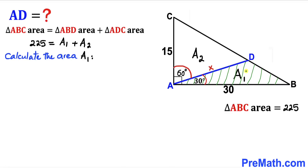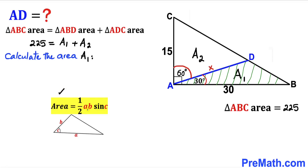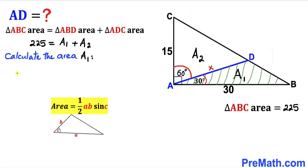Let's calculate the area of triangle ABD, which is A₁. Recalling the area formula: area equals one half times the two side lengths times the sine of the included angle. In triangle ABD, our side lengths are 30 and x, and the angle between them is 30 degrees. So A₁ equals one half times 30 times x times sine of 30 degrees.